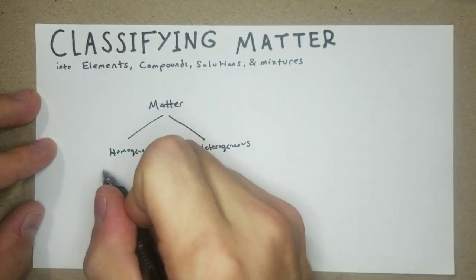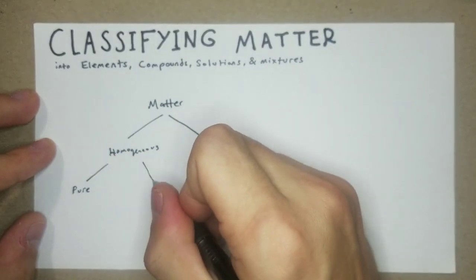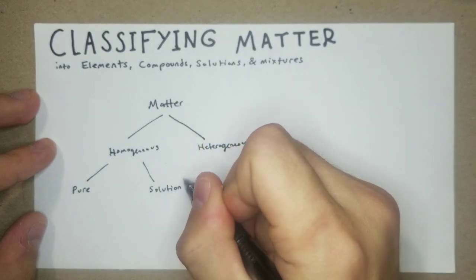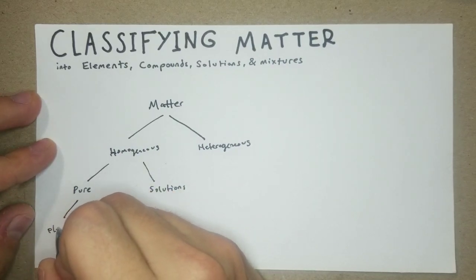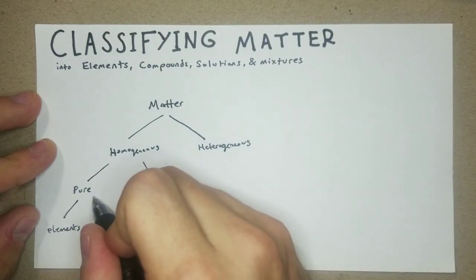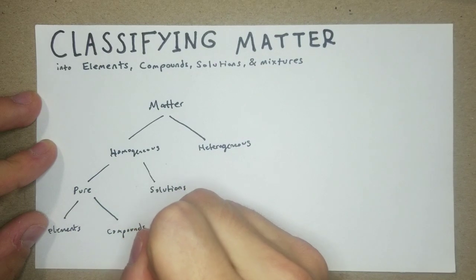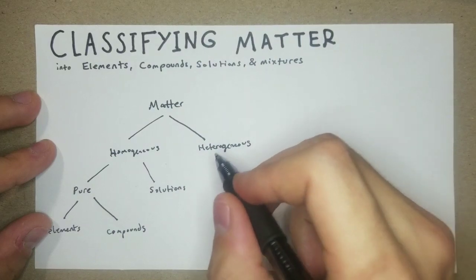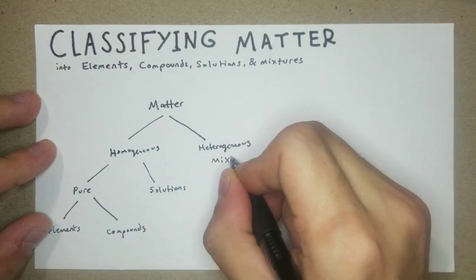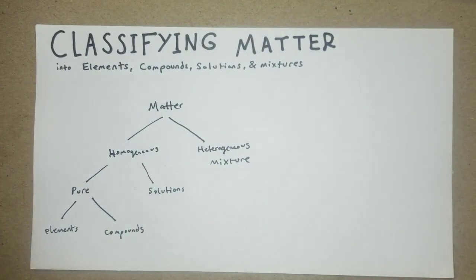That's how at least my professor described it. Of homogeneous we have pure and solution. Of pure we can further differentiate that into elements and compounds. The only other thing I'm going to add is mixtures. If it's heterogeneous it's a mixture. This is the basic framework, good to memorize, and then you can break down things as you go.